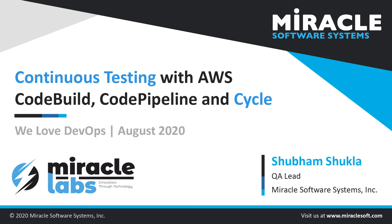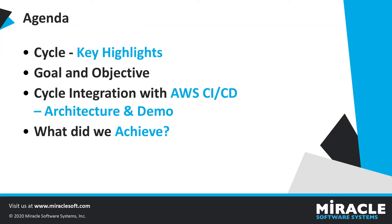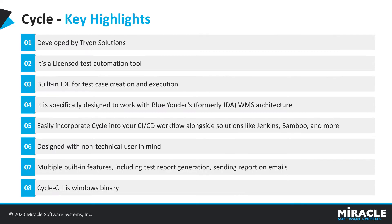Our topic is continuous testing with AWS CodeBuild, CodePipeline, and Cycle. Let's look at the agenda: we are going to look at the key highlights of the Cycle test automation tool, goal and objective of the session, Cycle integration with AWS CI/CD architecture, and a quick demo. In the end we will see what we achieved.